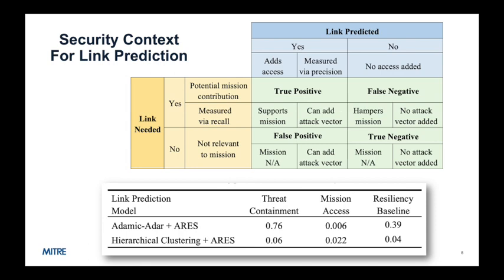As shown in the upper table, any positive prediction of a link, either a true positive or a false positive, represents an allowed access that would not have been allowed without link prediction. Any negative prediction, either a true negative or a false negative, represents no further allowed access beyond policy based on historical records. A true positive is predicted to be needed and is in fact needed.